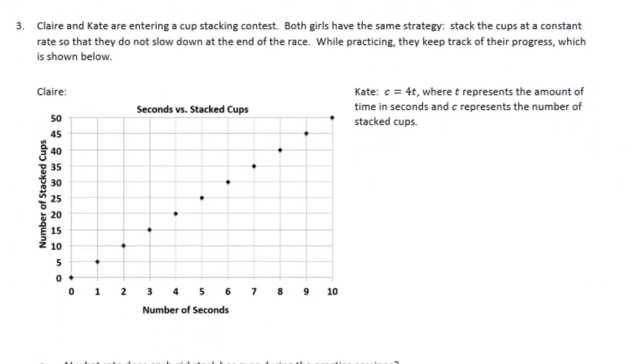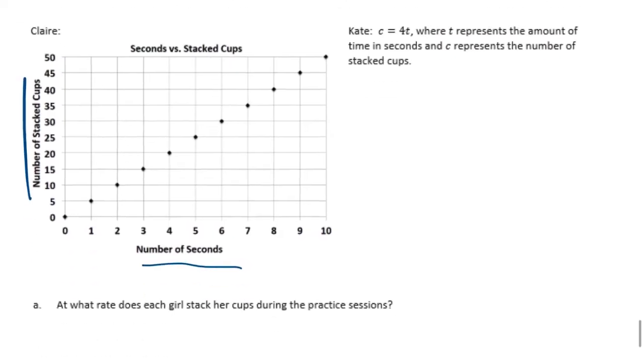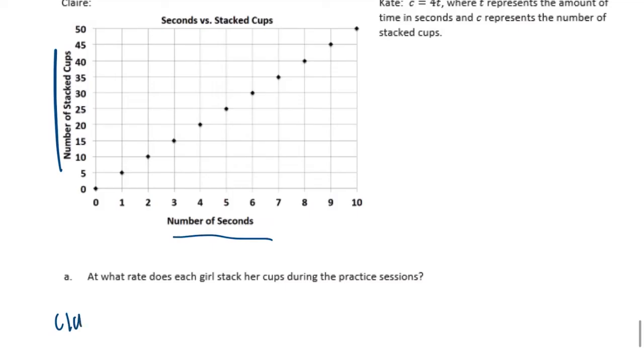Number 3. Claire and Kate are entering a cup stacking contest. Both girls have the same strategy. Stack the cups at a constant rate so that they do not slow down at the end of the race. When practicing, they keep track of their progress, which is shown below. So Claire, we can see on this graph that the number of stacked cups is listed here up the side. And the number of seconds is right here. So let's say, Claire, we can see that in 1 second she stacks 5 cups. So she can stack 5 cups per second.